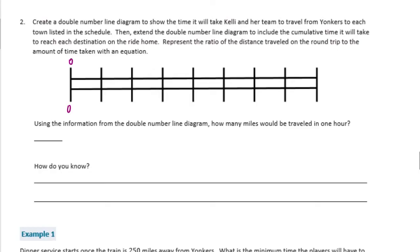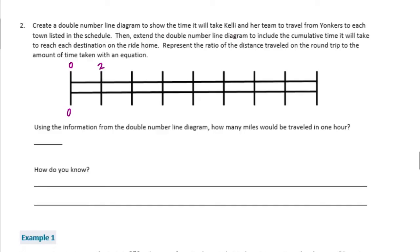Let's start with zeros. So zero hours you get nowhere. Two hours you get 100 miles, four hours 200, six hours 300, eight hours 400. So now it wants us to extend it for the return trip. 10 hours 500, 12 hours 600, 14 hours 700, 16 hours 800, and then they're back home.